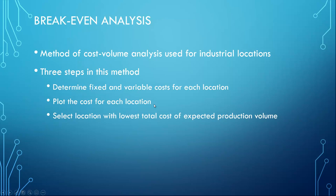The second method, we are going to use the cost volume analysis or the break-even analysis. This method is usually used for industrial locations such as manufacturing facilities or processing distribution centers. There are three steps in this method. In the first step, we determine fixed and variable costs of each location. In the second step, we plot the cost for each location. And in the last step, we select the location with the lowest total cost of expected production volume.